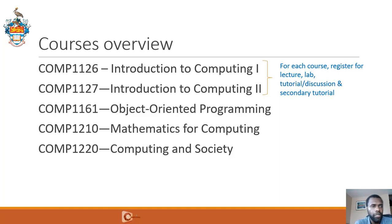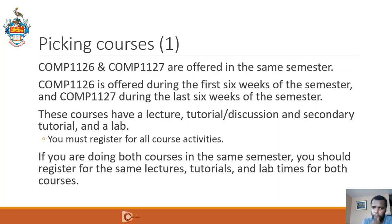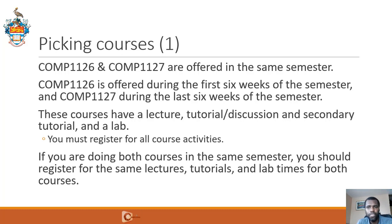You have Comp 1126 and Comp 1127 — Introduction to Computing 1 and 2. Then you have Comp 1161, which is Object Oriented Programming, Comp 1210 Mathematics for Computing, and Comp 1220 which is Computing and Society. Comp 1126 and 1127 are offered in the same semester. All of you should be taking both Comp 1126 and 1127 in Semester 1. Comp 1126 is offered in the first six weeks of the semester, and Comp 1127 in the last six weeks. These courses will have a lecture, a tutorial/discussion, a secondary tutorial, and a lab. You must register for all the course activities.